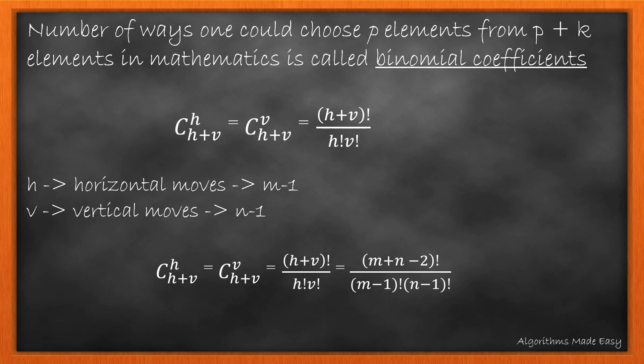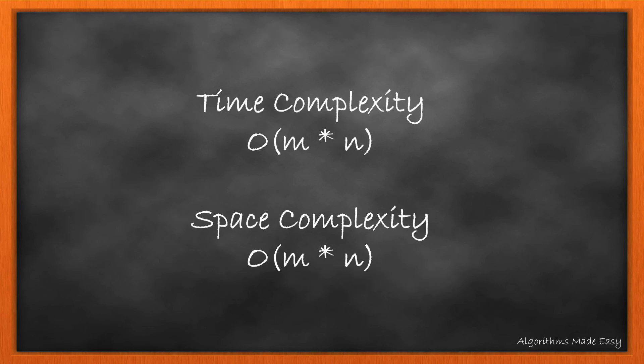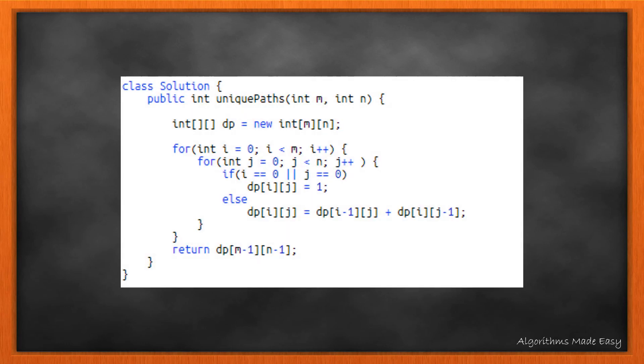We could have also solved it using this formula. In that case, its complexity would depend on the method used to find the factorial. However, for Python 3 there is an inbuilt factorial method that has a time complexity lower than that of the DP method. So if you are solving the question using Python 3, you could definitely use it. The time and space complexity for this algorithm is O(m×n). Here's the code snippet — also check out the link to the Java code in the description below.